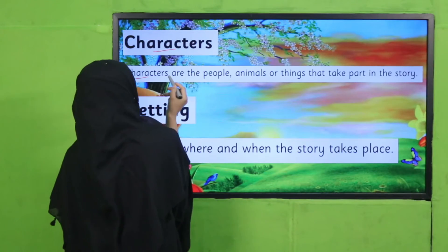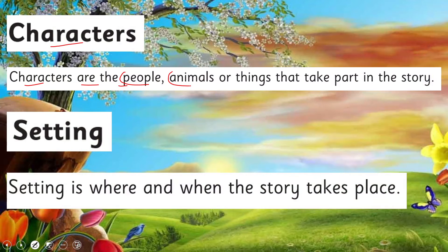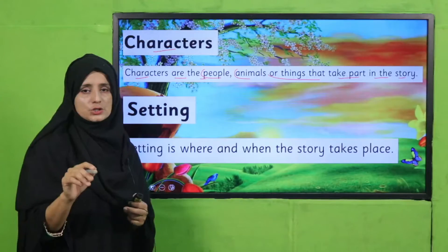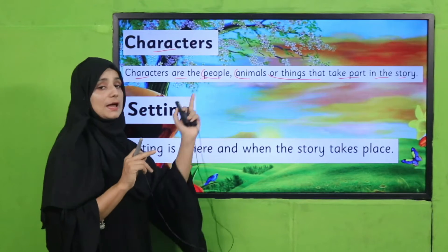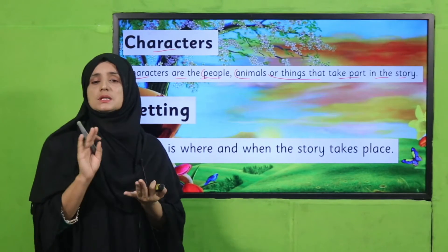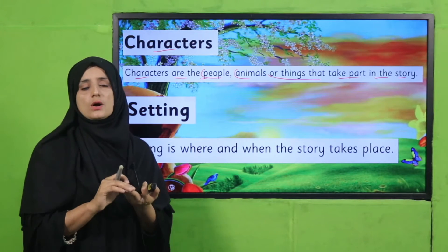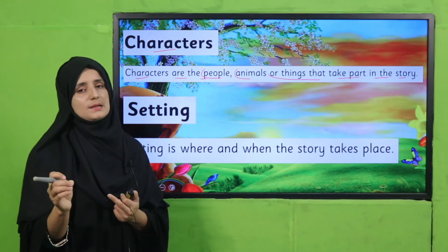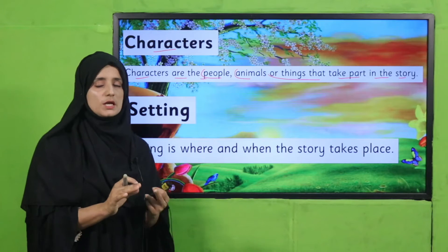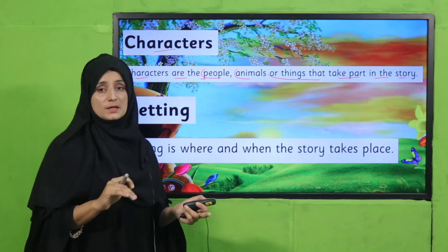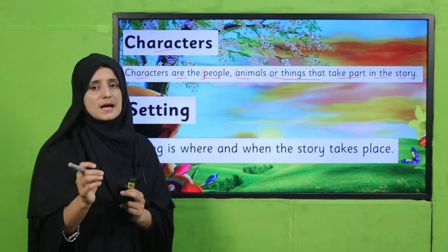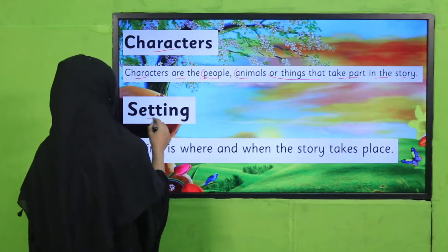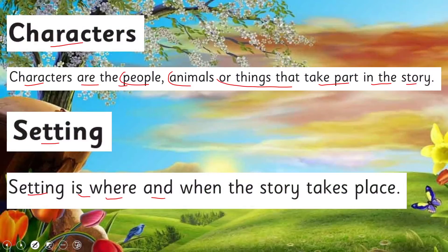Characters are the people, animals, or things that take part in the story. Characters can be people, animals, birds, or anything else taking place in the story — these are called characters. It doesn't matter if there is one character or many characters, but the role model is always one main character.